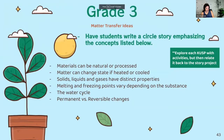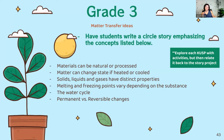For grade three, my idea is to have students write a circle story emphasizing concepts: materials that can be natural versus processed, matter that can change state if heated or cooled, solids/liquids/gases having distinct properties, melting and freezing points, the water cycle, and permanent versus reversible changes. You explore the cusp with activities but constantly relate it back to the story project. I see this connecting with the grade three language arts curriculum perfectly, since it asks students to write a circle story — and it works great with the water cycle because the water cycle is itself a circle.